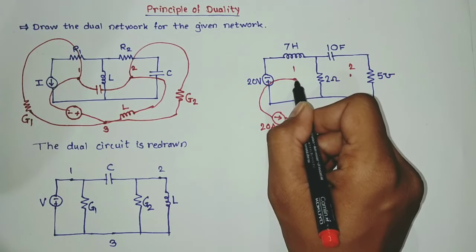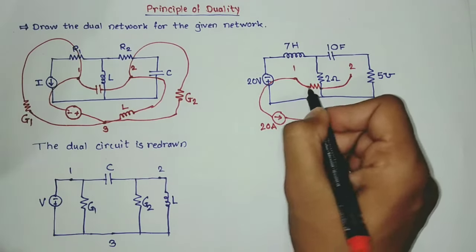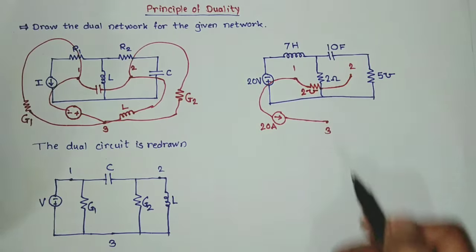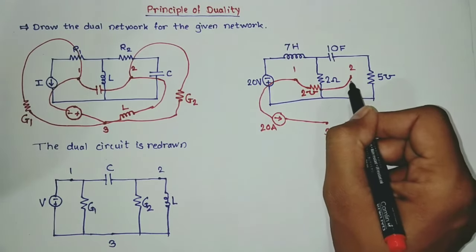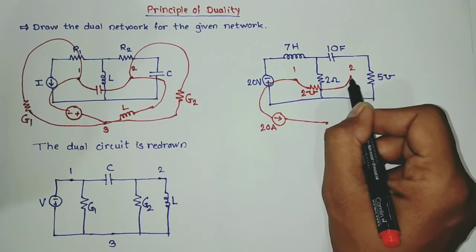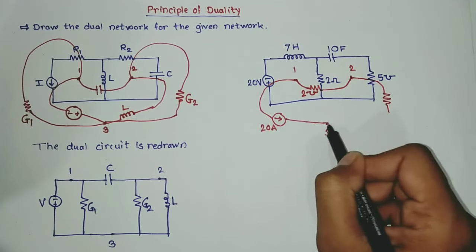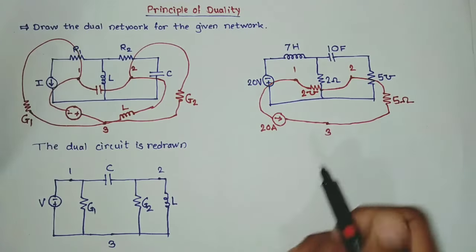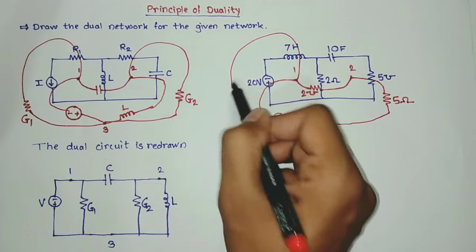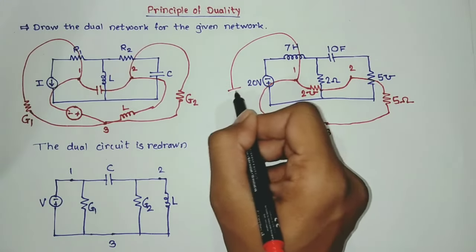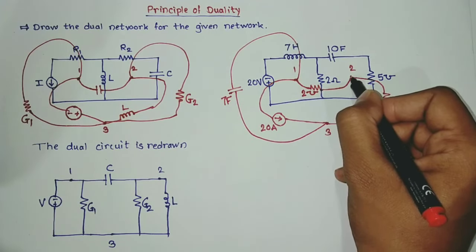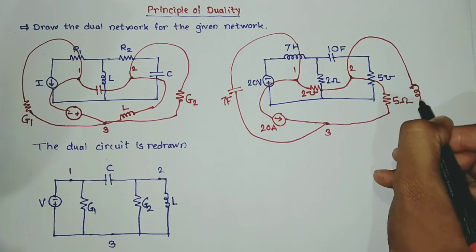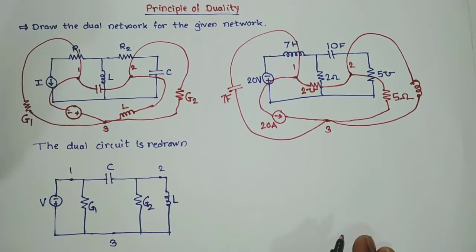In between one and two the two ohm resistance is there and this is replaced by two mho conductance. In between two and three we are having a resistance — this conductance will be replaced by a resistance of five ohm. Similarly, the seven henry inductor is replaced by a seven farad capacitor, and this ten farad capacitor is replaced by a ten henry inductor.